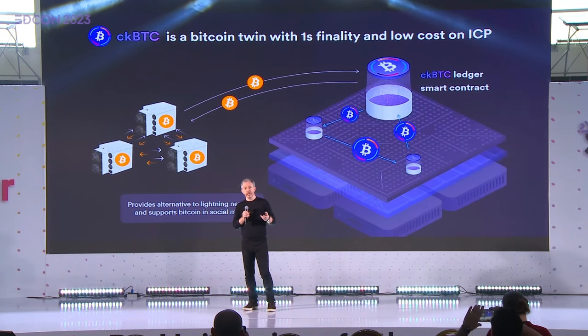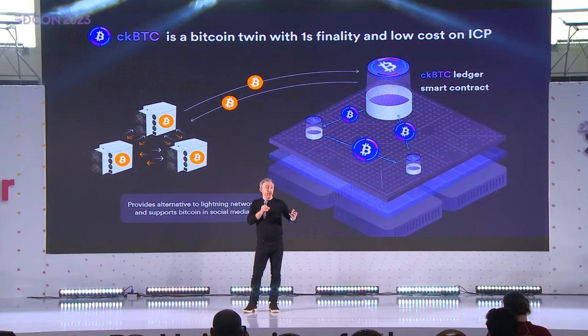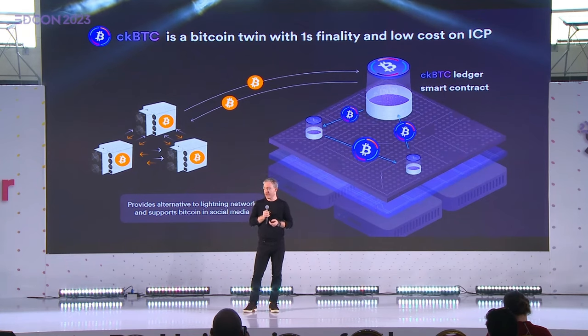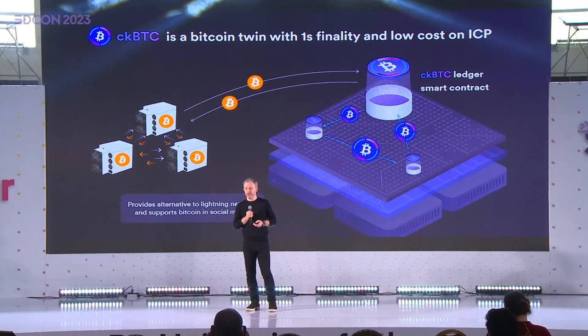We use the integration with Bitcoin to create something called chain key Bitcoin. Internet computer nodes talk to Bitcoin nodes, pull blocks, and maintain the UTXO set to make it easy for developers. Chain key Bitcoin is created with a trustless contract — it allows you to transfer Bitcoin with one second finality at an incredibly low cost, like thousandths of a cent.